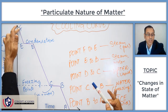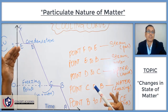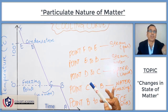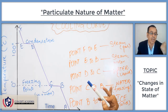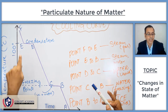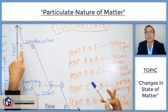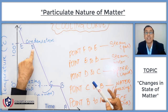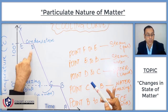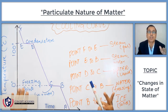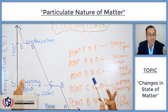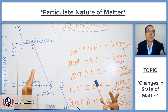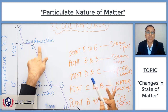At point F, which is steam, we are cooling down and the steam temperature is falling down. Heat is extracted out of it. And at point E, steam is converted into liquid water. So from point E to D, steam and liquid water both are coexisting. The temperature at which steam is converting into liquid is called the condensation point.